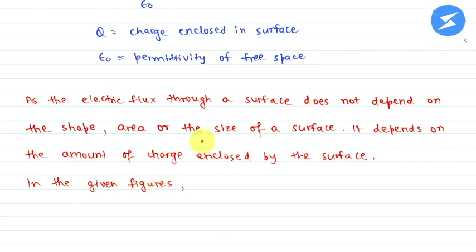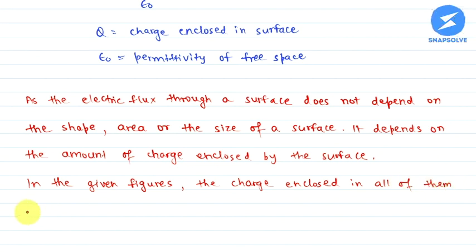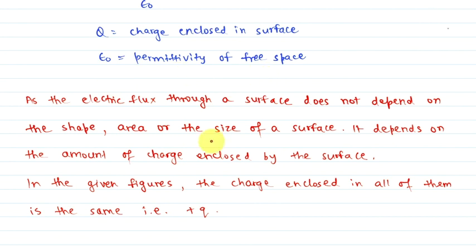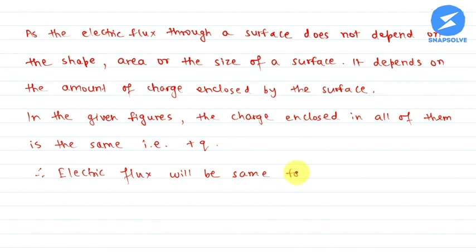The charge enclosed in all of them is the same — that is, plus Q. Epsilon-naught is the permittivity of free space, which is a constant. So for all of them, the electric flux will be the same for all the given figures.